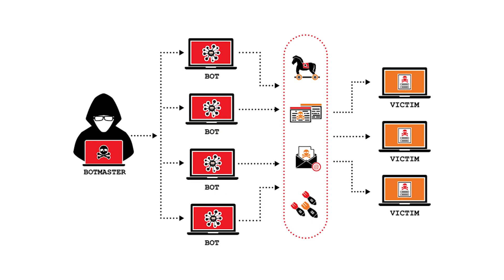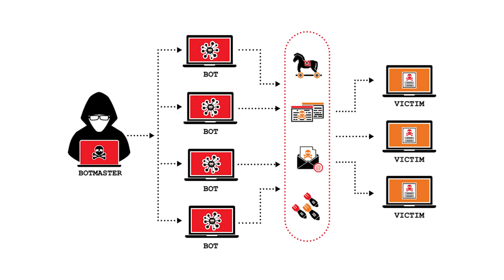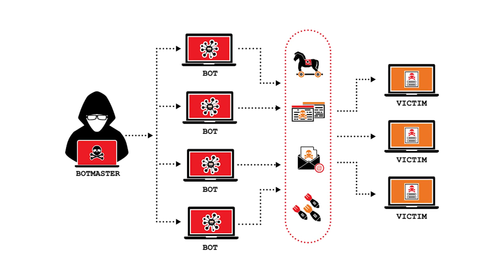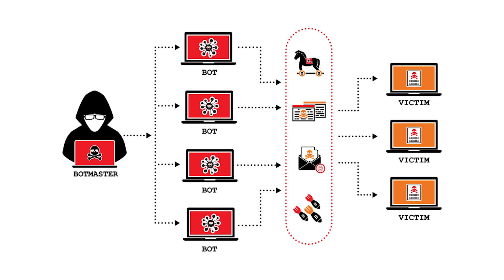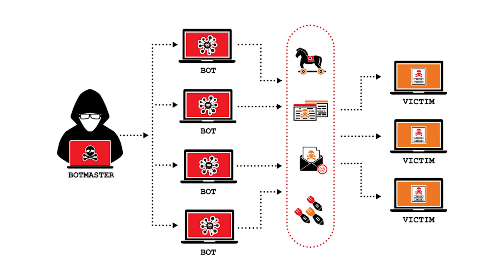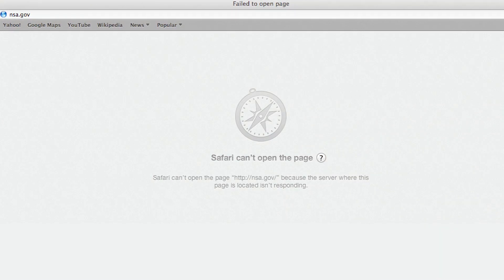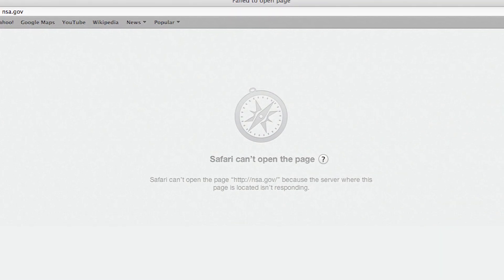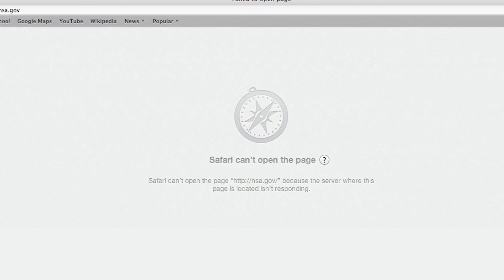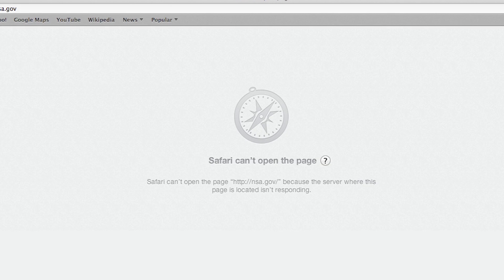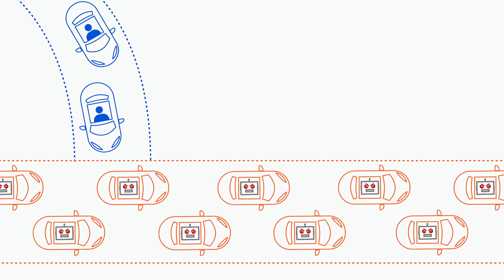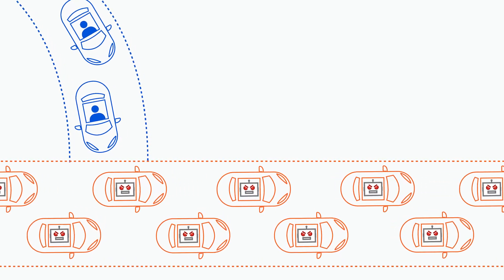DDoS, or Distributed Denial of Service attacks, are like the online equivalent of a traffic jam on the information highway. Imagine your favorite website or online service suddenly becoming unreachable — like a roadblock preventing you from reaching your destination. That's the chaos a DDoS attack creates.